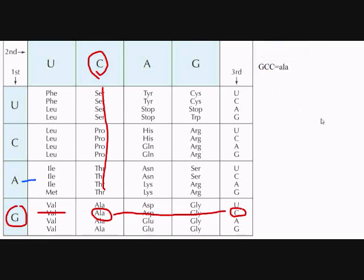Now, the only problem though with the code is that it is what they call degenerative. And that means that you only have 20 amino acids, yet you have 64 possibilities. So that means a lot of them are going to be the same like we just saw in alanine.